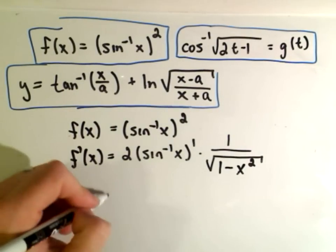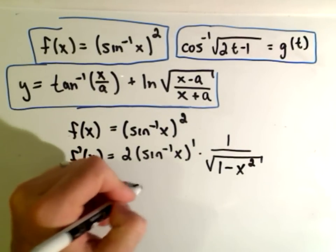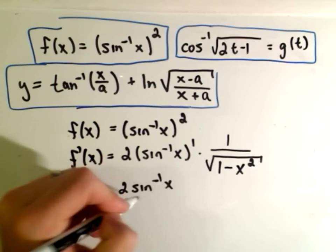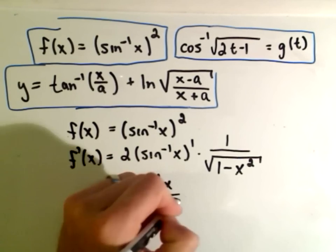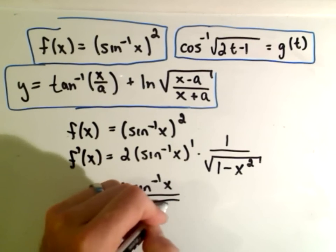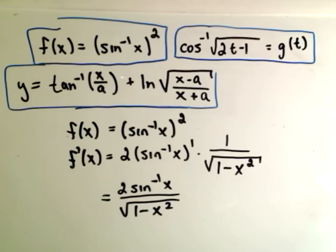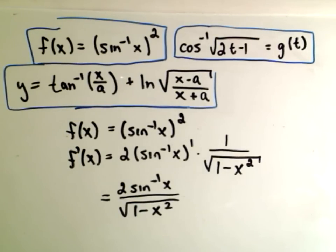one over the square root of one minus x squared. And there's really not a lot else you can do with this. You could write it as a single fraction and put the square root on the bottom, but other than that, there's not a ton of simplification that you can do. Okay, so pretty straightforward, nothing too crazy here.